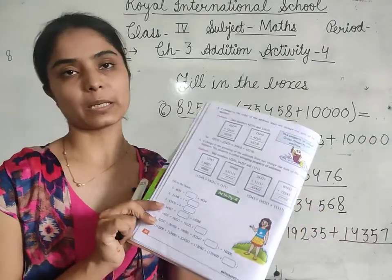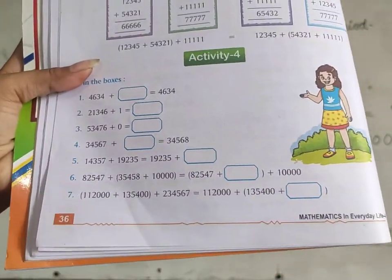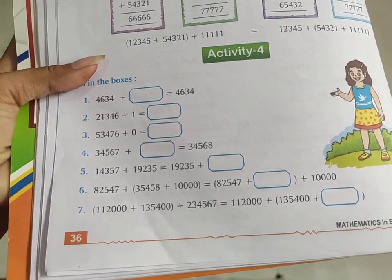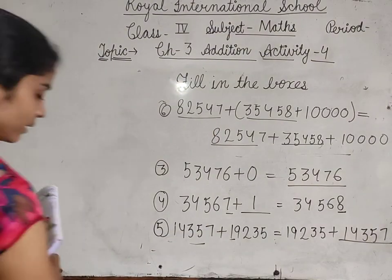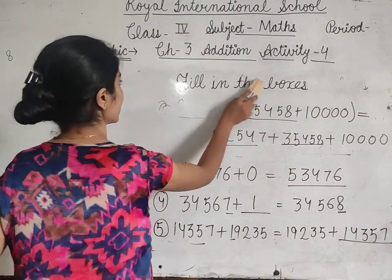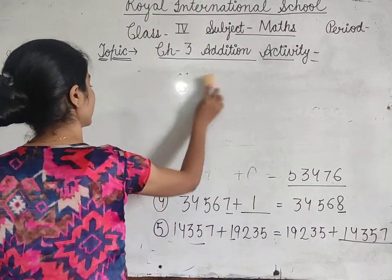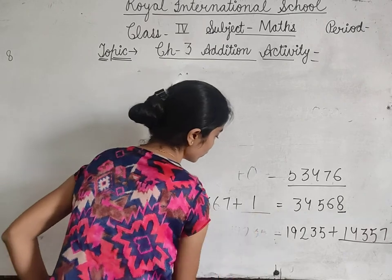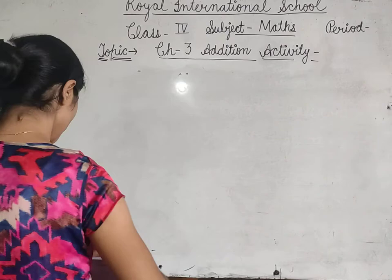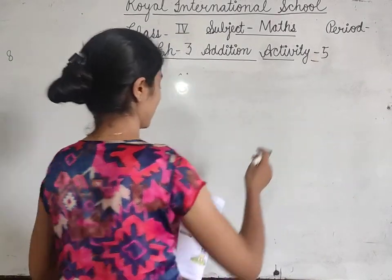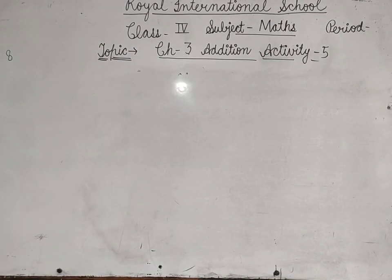Last जो है — वो आपको अपने आप करना है। 7th question आप खुद try करेंगे। Book में complete करना है। तो यह activity complete हो चुकी है। Now जल्दी से move on करेंगे activity number 5 पे — page number 37 पे। छोटी सी activity है जो आपको notebook में complete करनी है, book में नहीं।